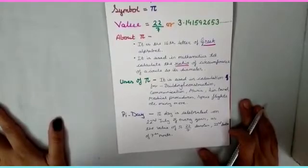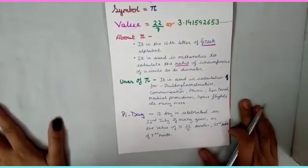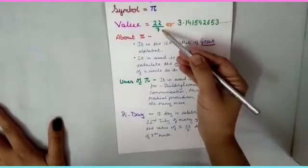Now when is pi day celebrated? It is celebrated on 22nd of July every year. Why 22nd of July? Because the value is 22 upon 7.